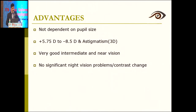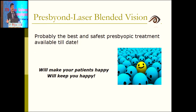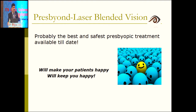Binocular uncorrected near vision: N18 in only 3% of cases, but 97% of patients read N6. All patients had satisfactory intermediate vision. The higher number of patients read 6/6 binocularly compared to through the dominant eye alone. Advantages: wide range of power, not dependent on pupil size, and all patients had very good intermediate and near vision. Pre-op workup and technique mastery are what ultimately determine patient satisfaction. Personally, I feel PresbyBond is one of the best presbyopic treatments available in the world.